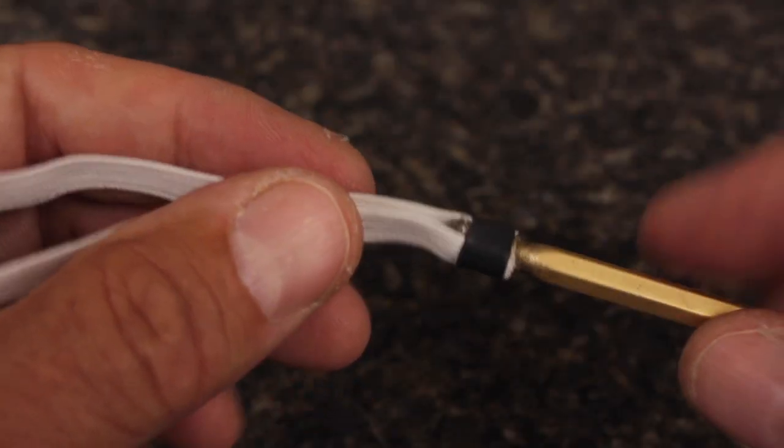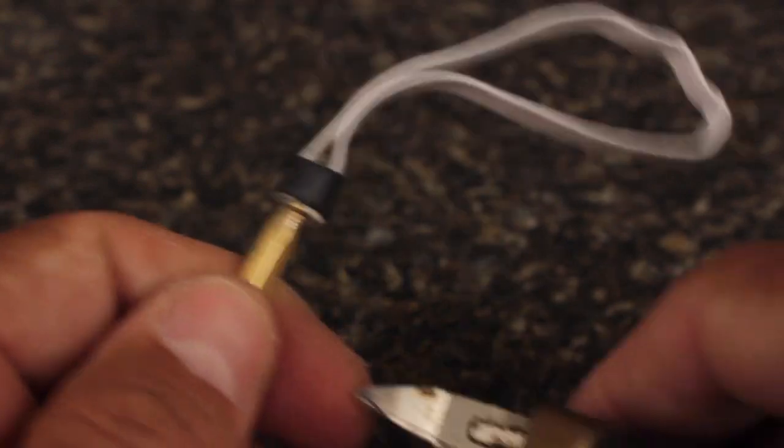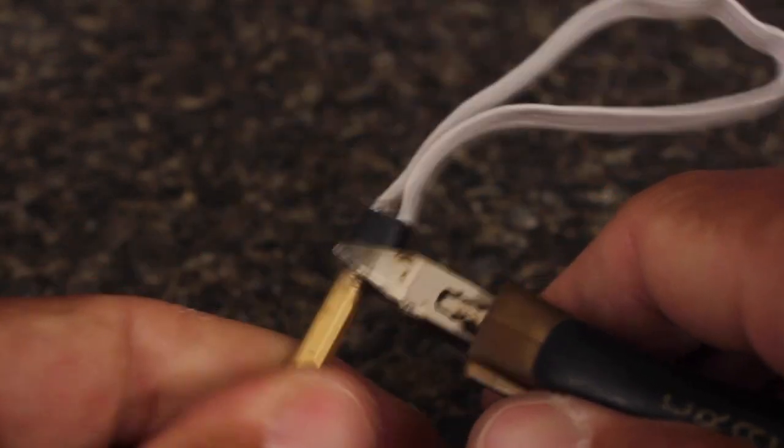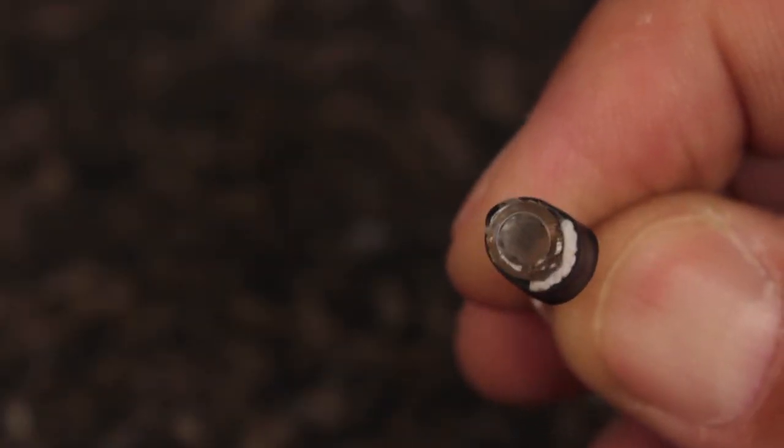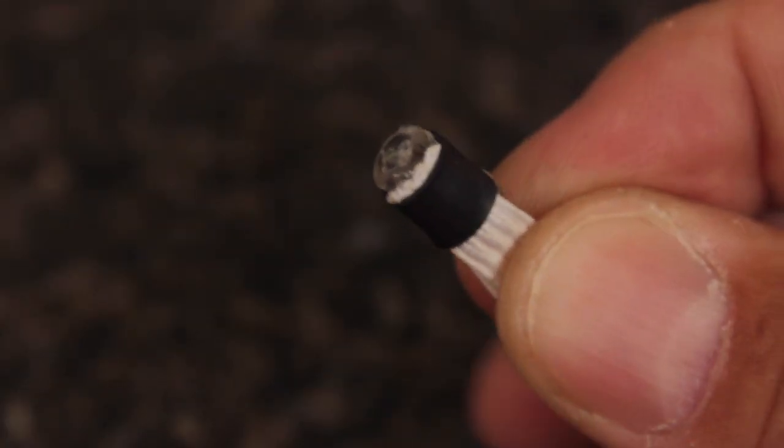If you're impatient like me and can't wait till it completely cools, again, use the nippers to push the plastic tubing from the bodkin. This way, things don't get jostled around too bad before the glue has time to set.